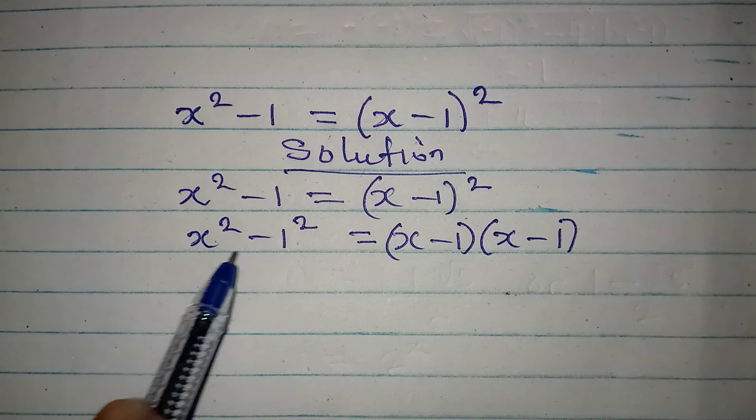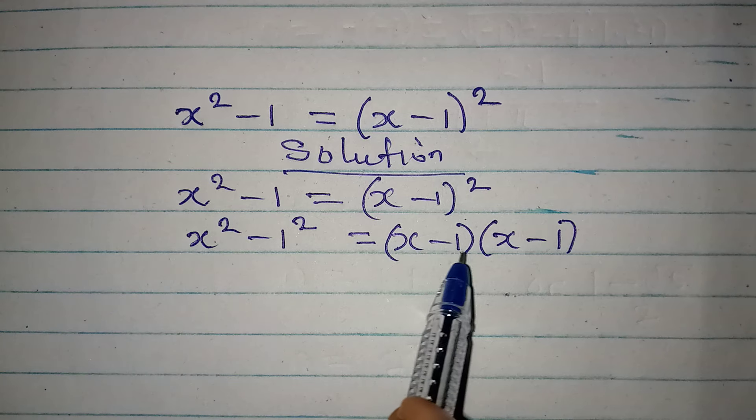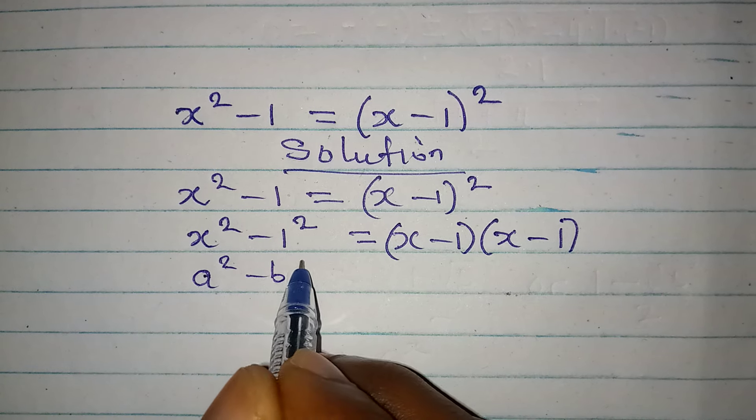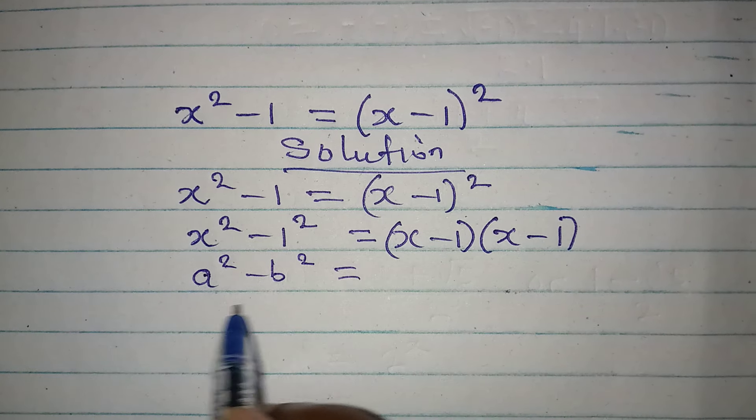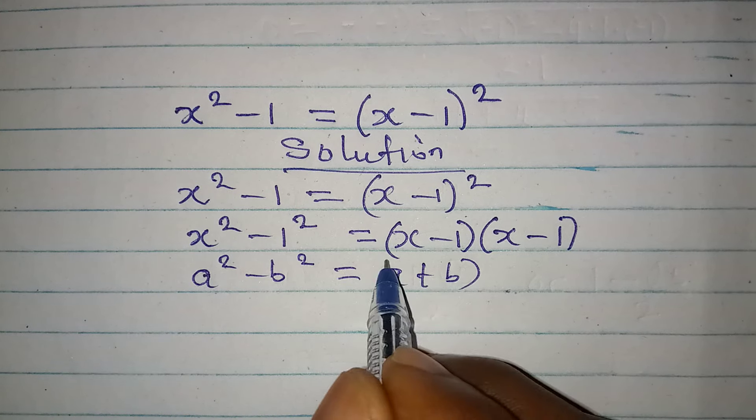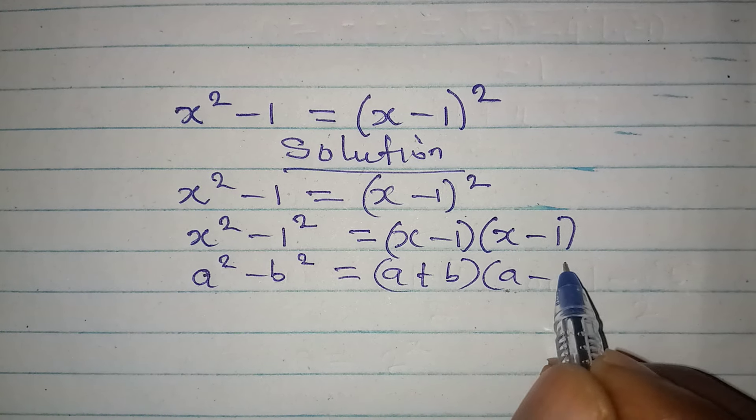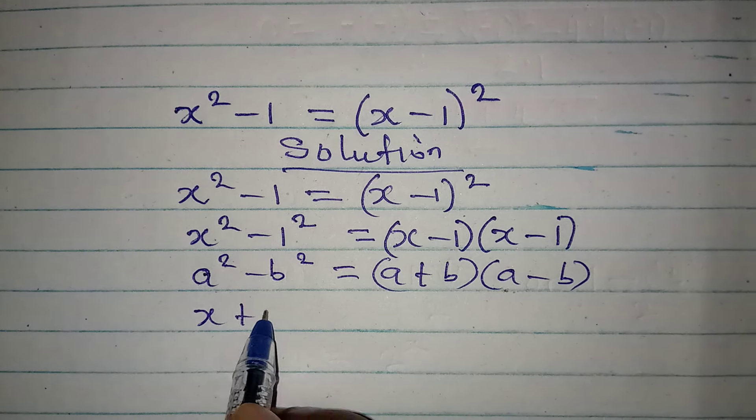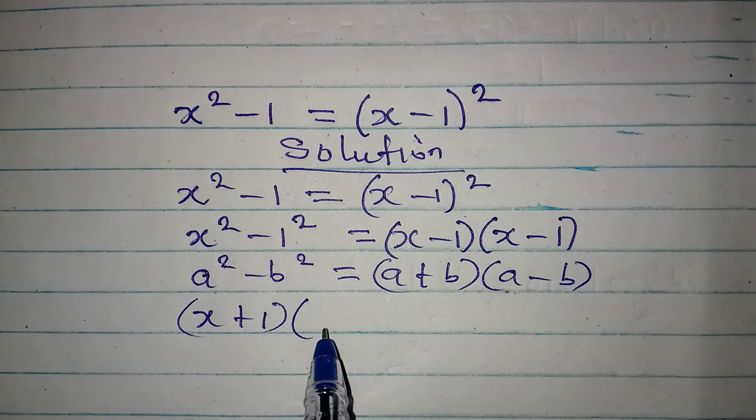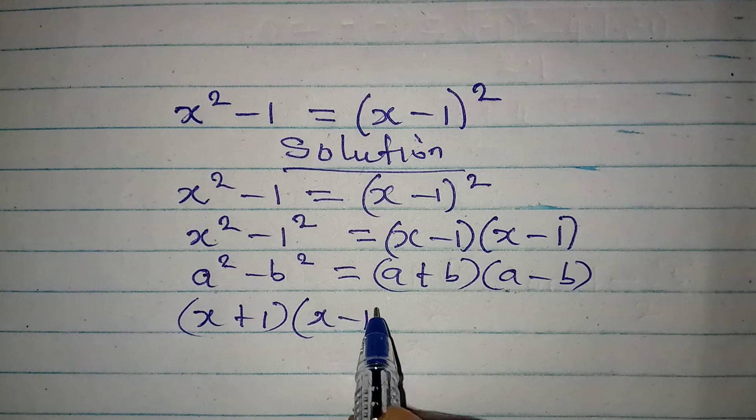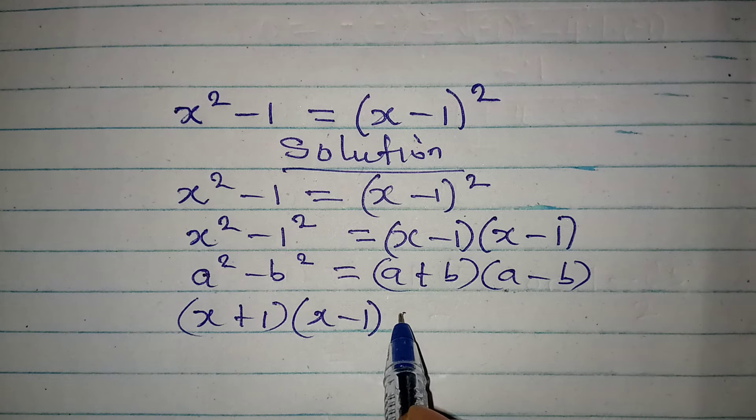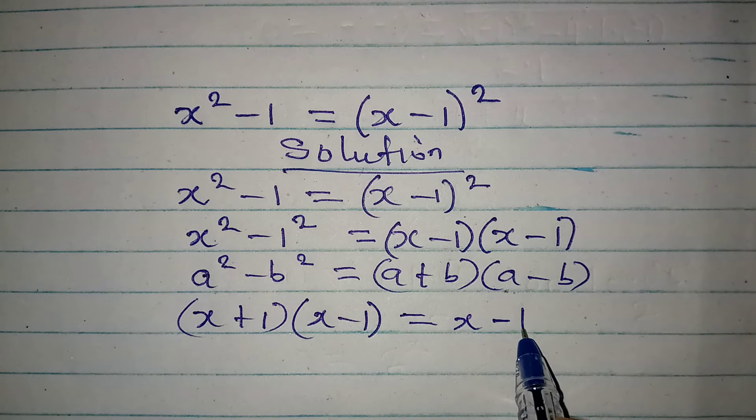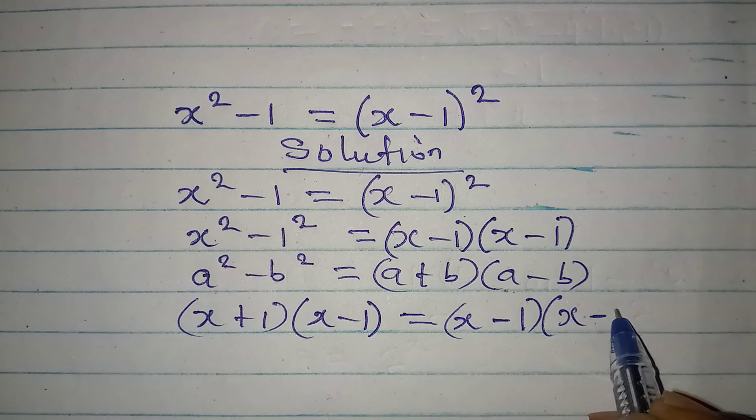We can apply difference of two squares here. Because if a squared minus b squared is given, it will be the same thing as a plus b into a minus b. So from here alone, I will have x plus 1. Then I will also have x minus 1 just from here alone. So this will now be equal to x minus 1 into x minus 1.